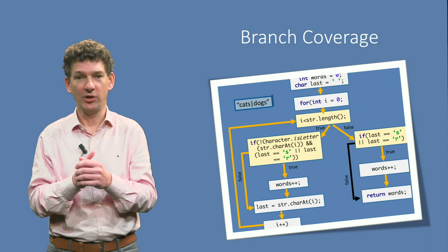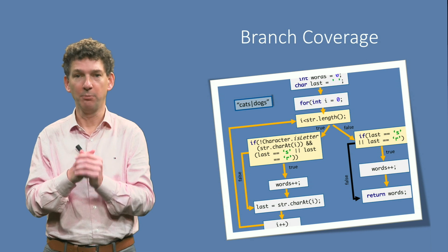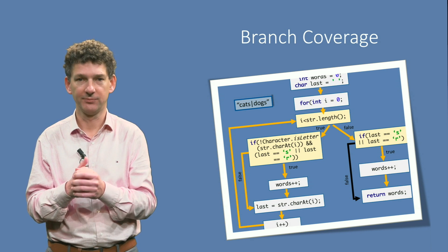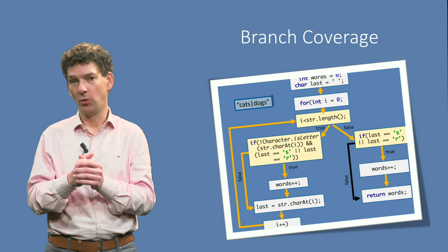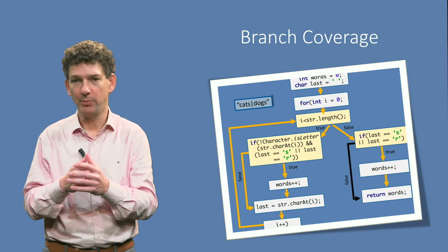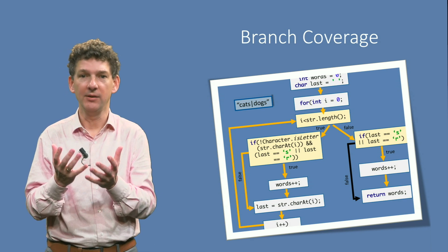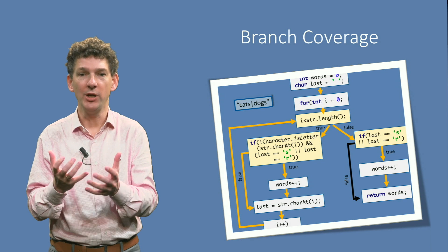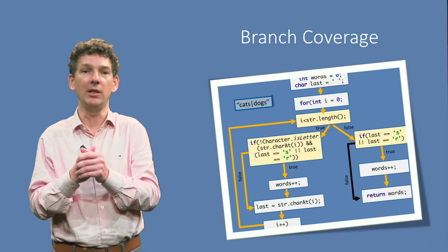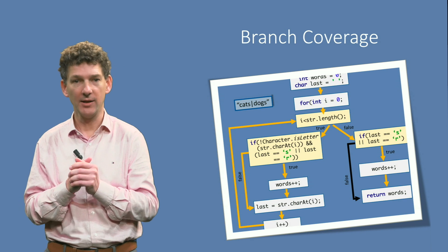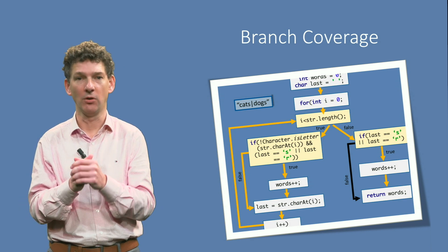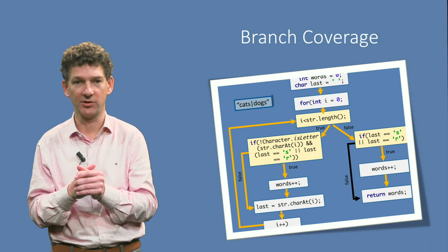Thus, decision tables are applicable in a wider context. Furthermore, as any functional testing strategy, model-based testing can detect omissions — variants or actions that are not even implemented — and hence can never be executed when using the code as a starting point for the tests.